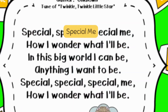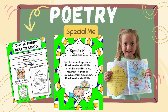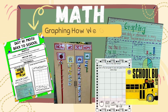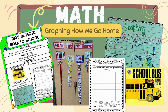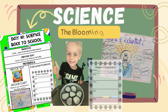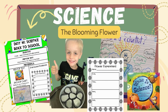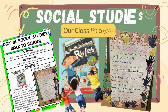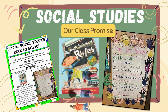For poetry, the objective is I can read about poetry and learn about rhyming words. For math, the objective is I can collect data and graph how we can go home. For science, the objective is I can learn what a scientist is and that science is all around us. For social studies, the objective is I can learn rules and procedures of the classroom.